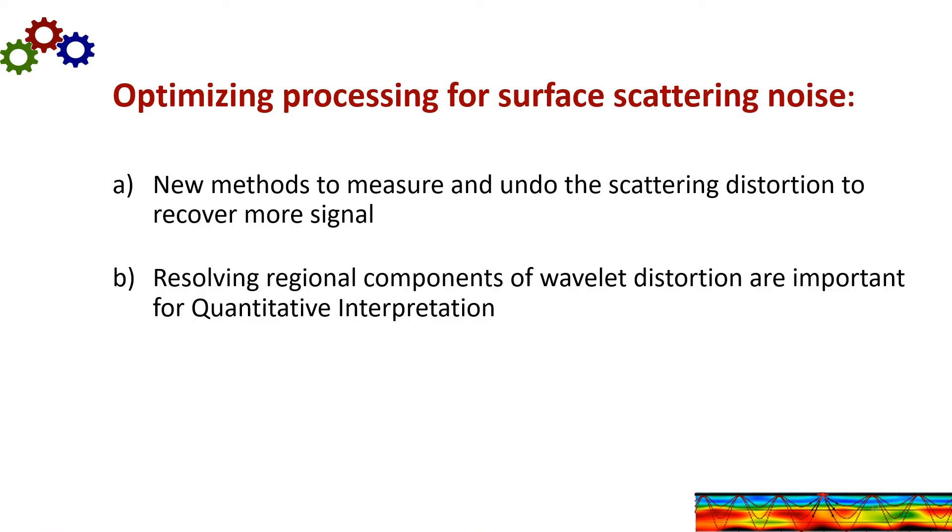To optimize processing for the surface scattering noise, I've shown you how new methods can measure and undo the scattering distortion to recover more signal. Now this is significant. But also it is important to resolve the regional components of the wavelet distortion. This is for quantitative interpretation such as attribute analysis and impedance inversion. And I'll show some examples of this later.